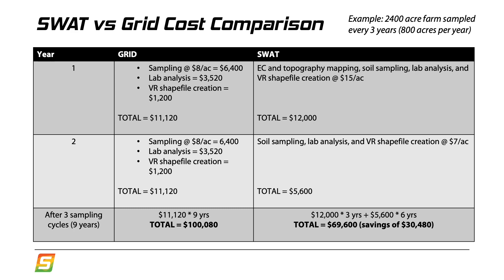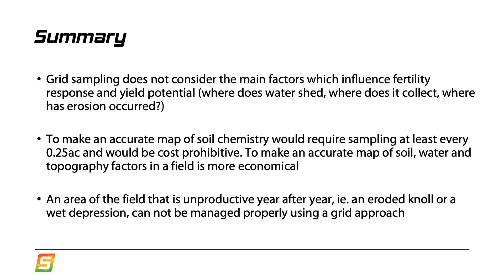To summarize: grid sampling isn't considering the main factors that influence fertility response and yield potential — where water is shedding, where it's collecting, where erosion has occurred. To make an accurate map of soil chemistry would require very high-resolution soil sampling, which is cost-prohibitive. Mapping differences in soil water and topography is much more economical and arguably has as much or more influence on yield. Areas that are unproductive year after year — like eroded knolls, hilltops, or very wet depressions — can't be properly managed using a grid approach, but can be addressed with swap maps.